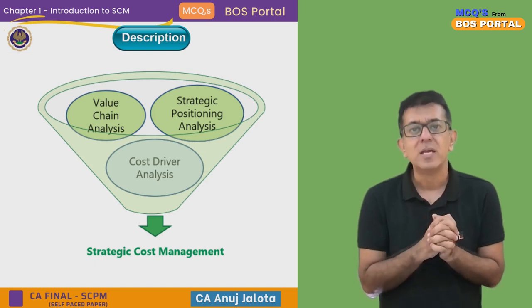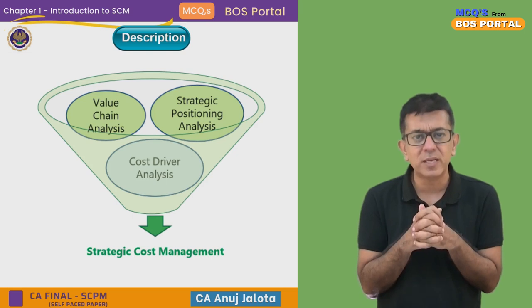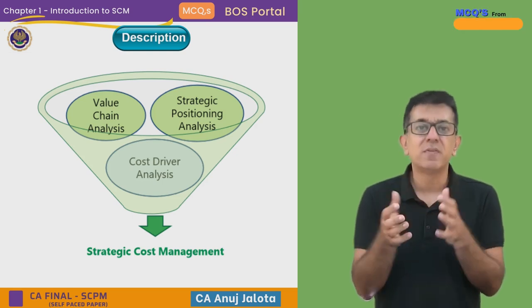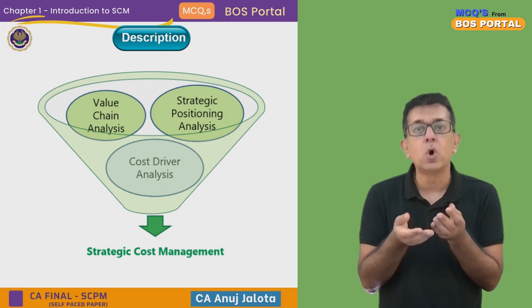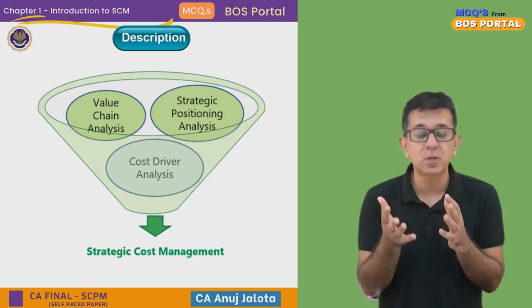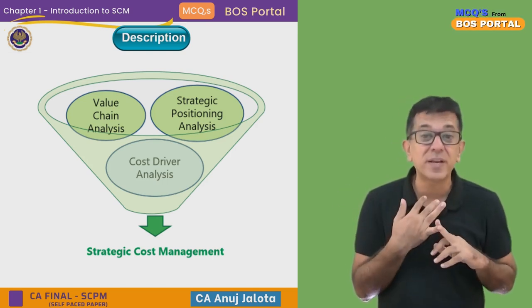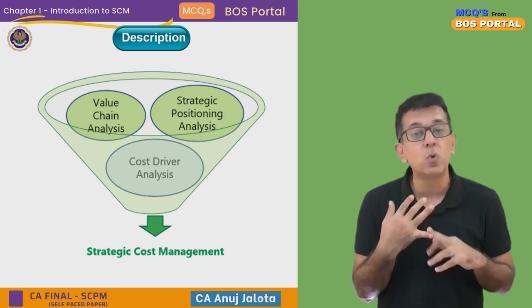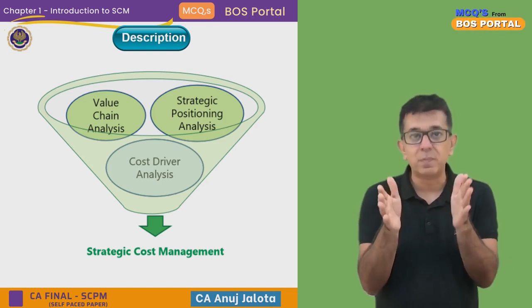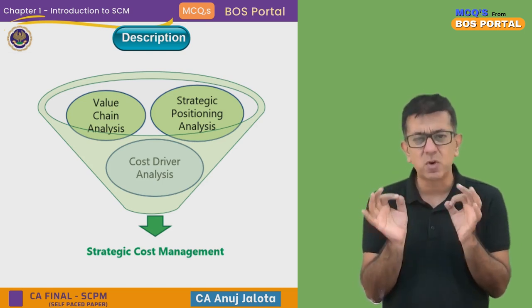The second pillar is strategic positioning analysis. Every company operates under a business environment influenced not only by what we do internally but also by external factors — how much competition exists, what products are available in the market, and what the expectations of the stakeholders are. All these things determine where the company will be positioned in the market.